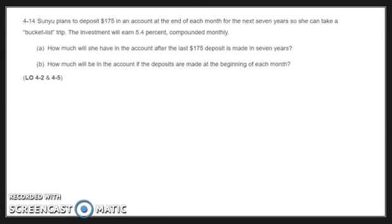Okay, this is problem 14 from chapter 4. It's similar to the previous problem, except we have monthly payments. Anytime you have monthly payments, that means you have monthly compounding. Suny plans to deposit $175 into an account at the end of each month for the next seven years so she can take a bucket list trip.